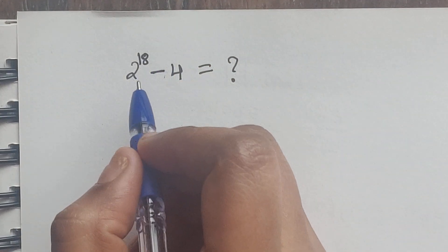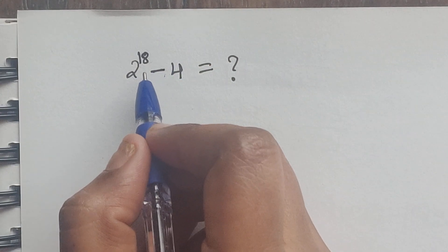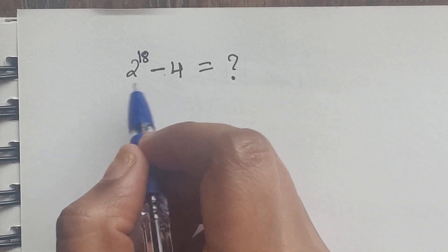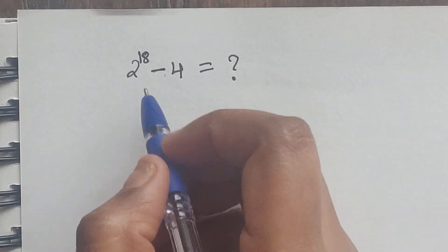Hello everyone, welcome back to our channel. Here we have one problem: 2 to the power of 18 minus 4. How do we solve this without using a calculator? Let me know your clue.